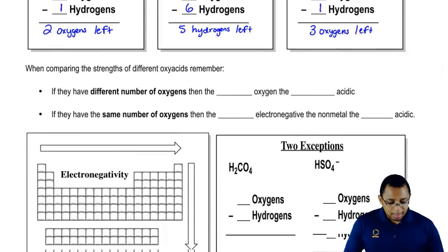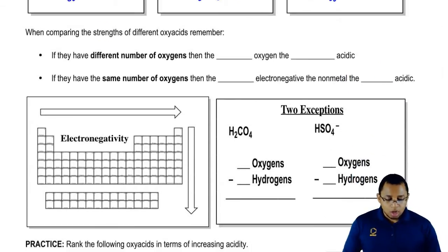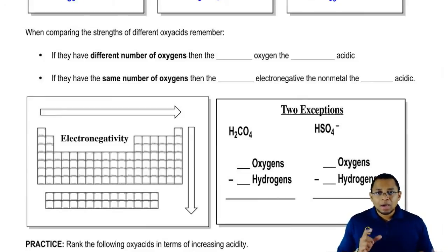Now that we know how to identify oxyacids as weak or strong, let's say we have more than one strong oxyacid. How do we determine which one is stronger than the other? That's when these two things come into play.